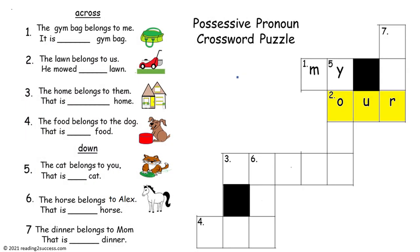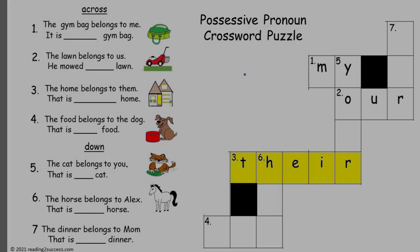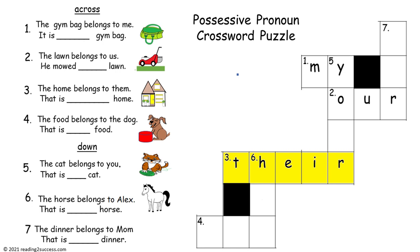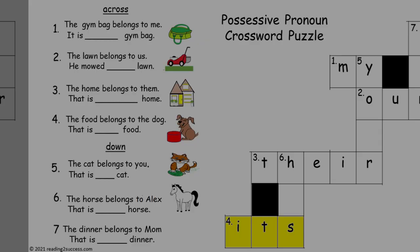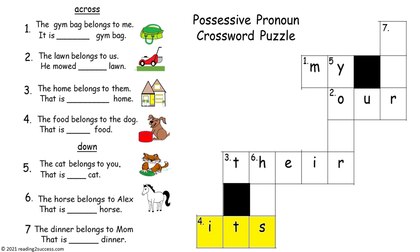The third clue: the home belongs to them. That is __ home. The answer is 'their.' That is their home. The fourth clue: the food belongs to the dog. That is __ food. The answer is 'its.' That is its food.